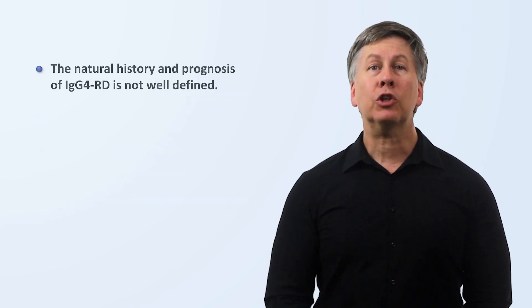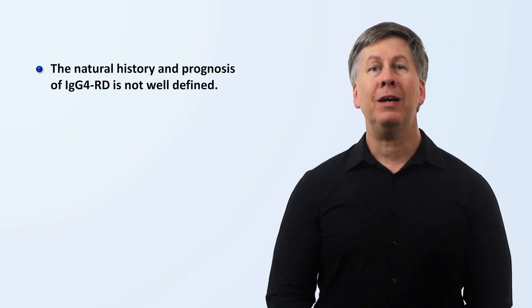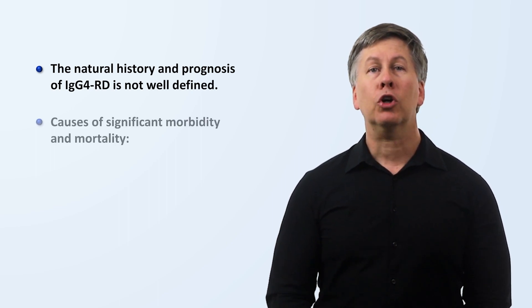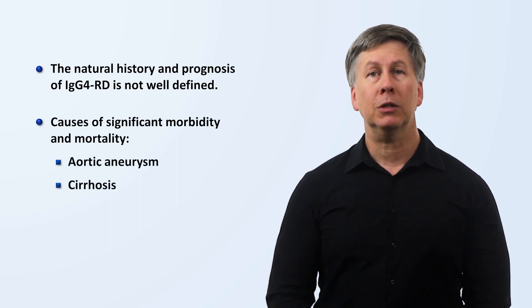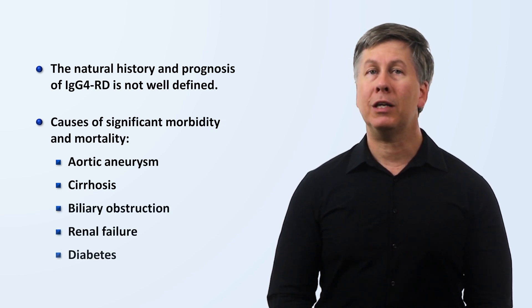The natural history and prognosis of IgG4-RD is not well defined, but appears to depend heavily on the specific organs affected. Causes of significant morbidity and mortality include aortic aneurysms, cirrhosis, biliary obstruction, renal failure, and diabetes from pancreatitis. Thanks for watching this brief overview of IgG4-related disease. Consider subscribing to Strong Medicine for more videos on underappreciated diseases like this one and a variety of other medical topics.